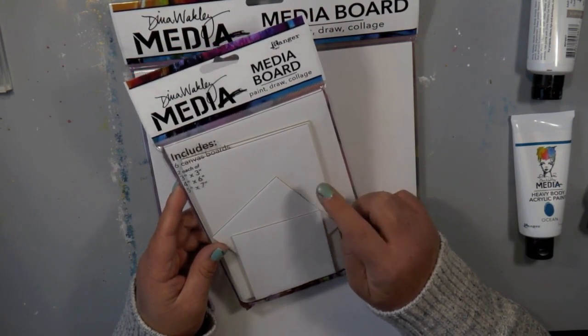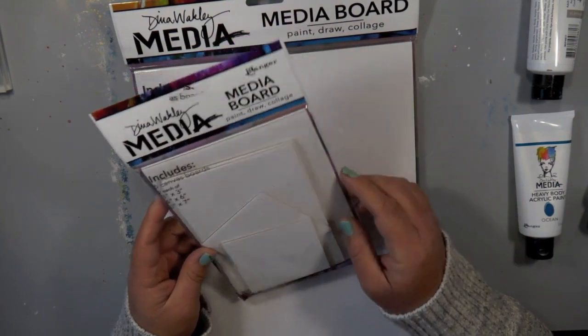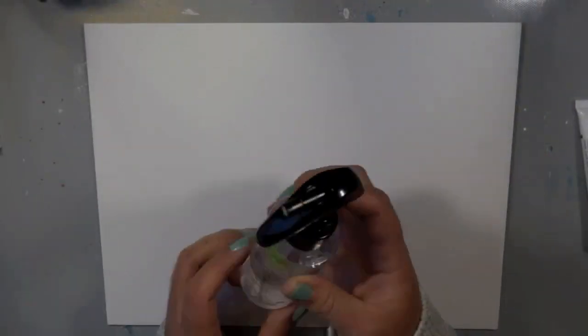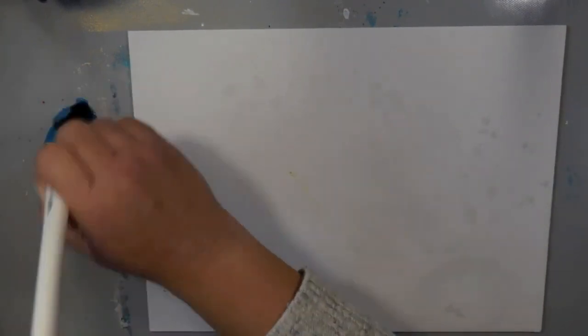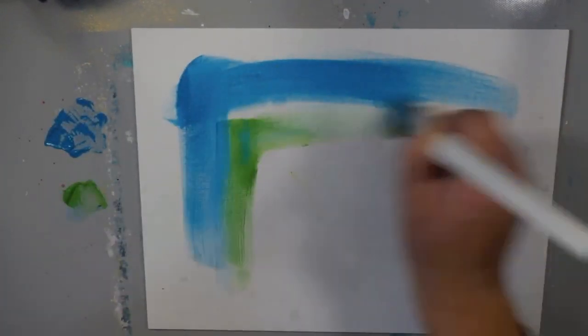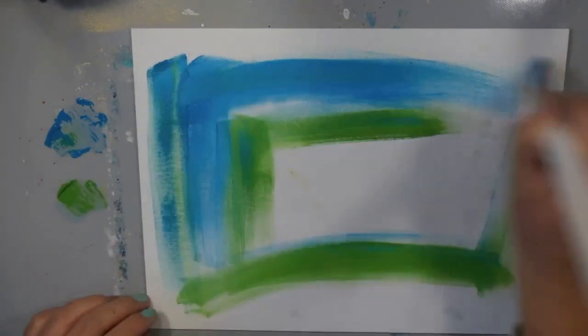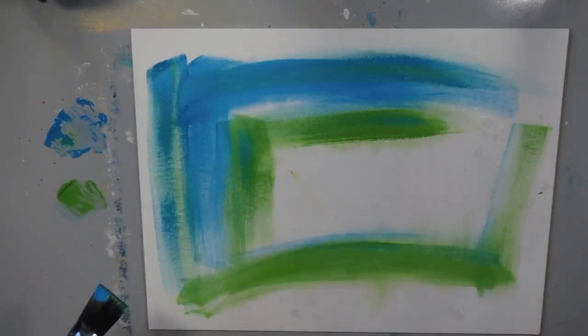They come in 5x7, 4x6, and 3x3 which are really fun sizes. I know Dina uses them a lot for bookmaking, but I am loving making canvas pieces, taking some of my art journal ideas and putting them on canvas. So that's what I decided to do today on the large 9x12 media board.